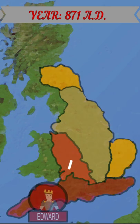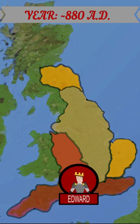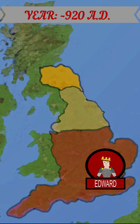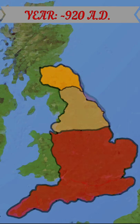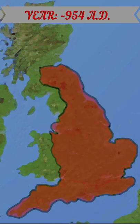His successor, King Edward, drove the Vikings out of England and incorporated Mercia into Wessex, creating a united English kingdom. By 954, England incorporated Northumbria.